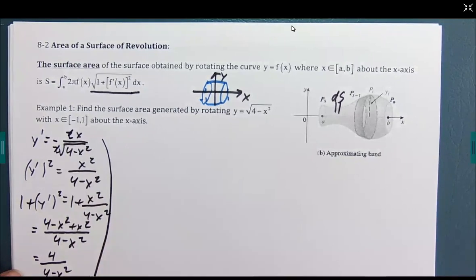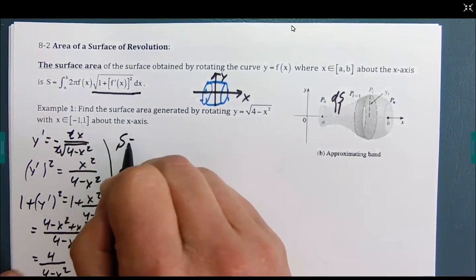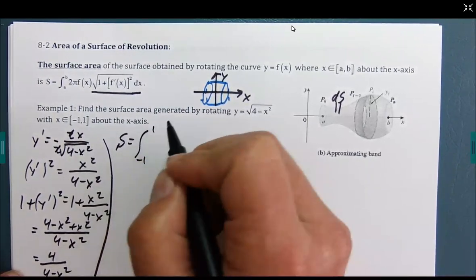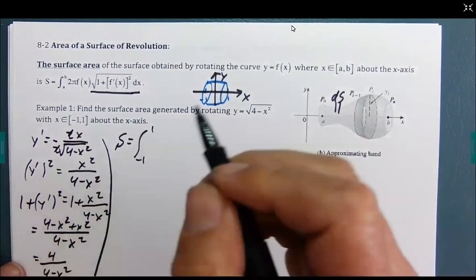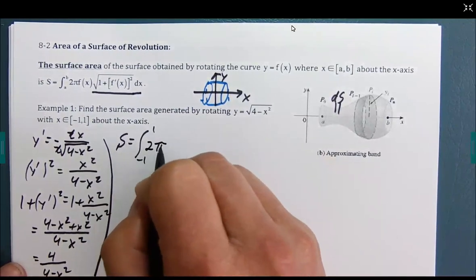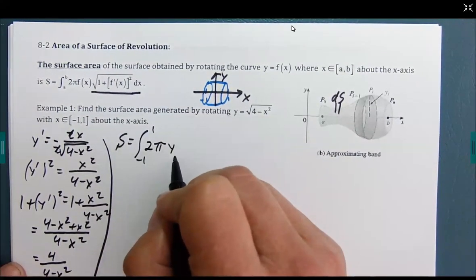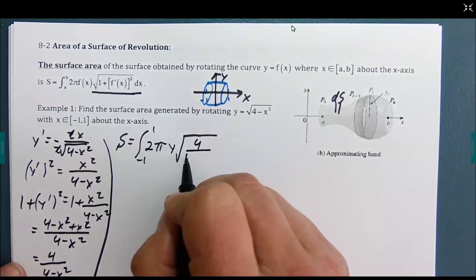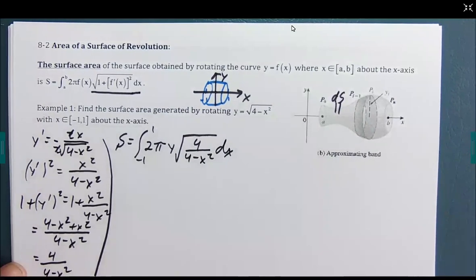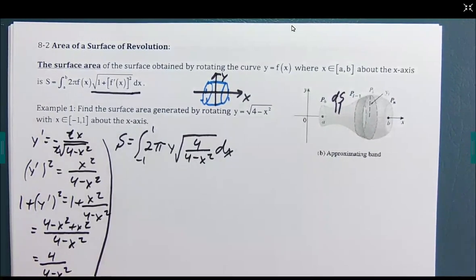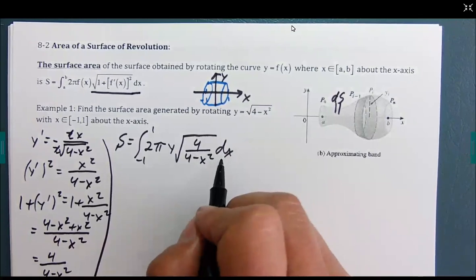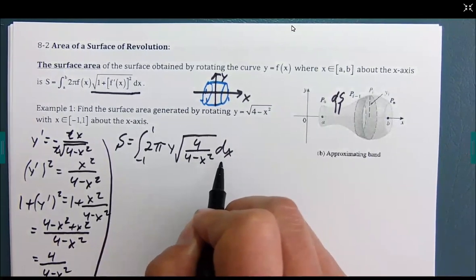Getting a common denominator, we get there and we'll notice that negative x² and x² go away. So, we end up with the surface area. It's going to be the integral from a to b, in this case, -1 to 1. And we actually end up with 2π times y times the square root of 4 over 4 minus x² dx.